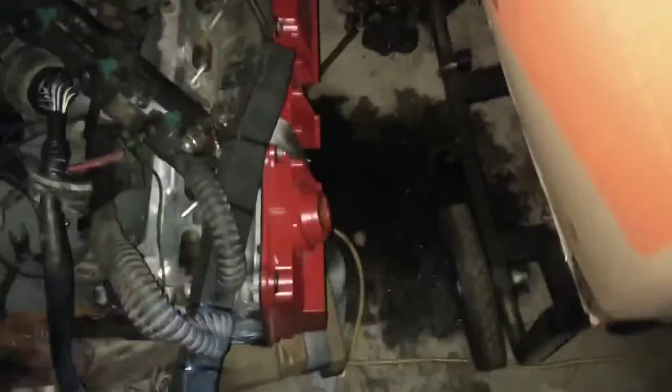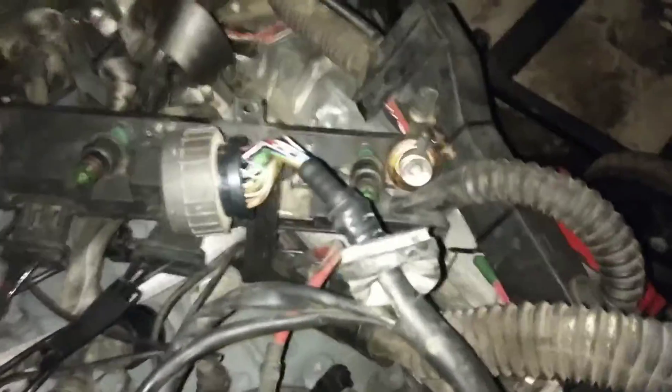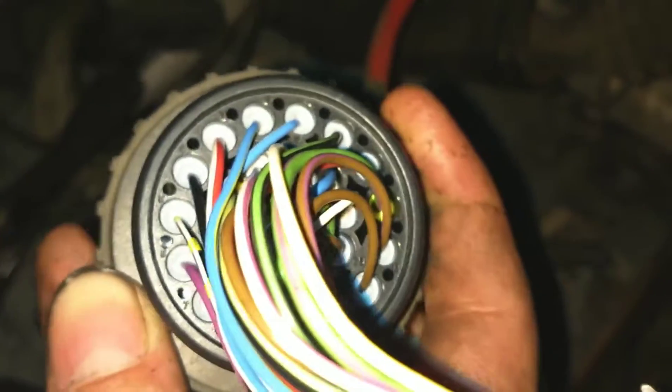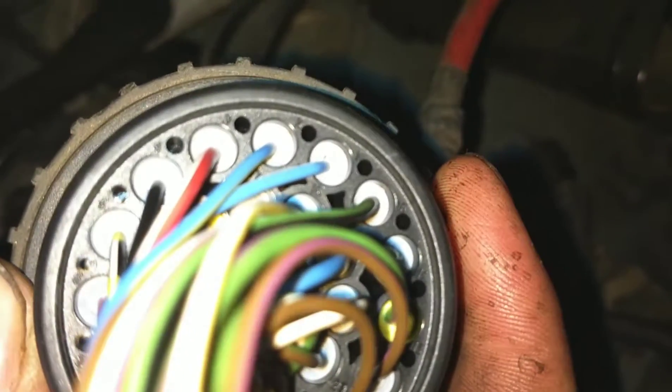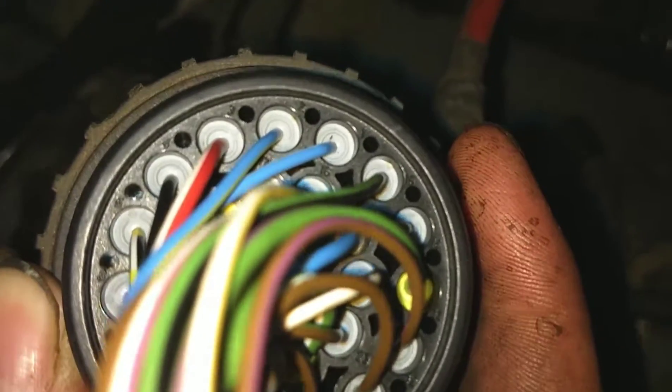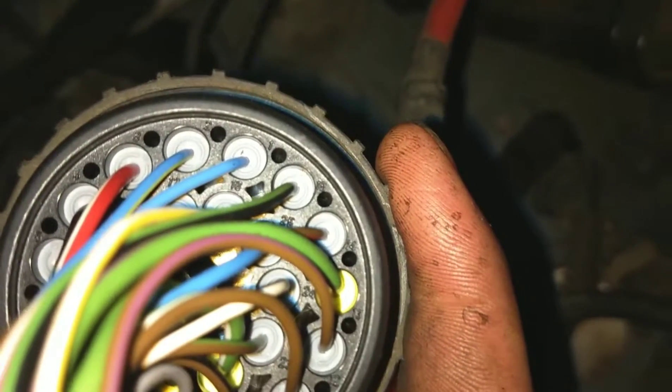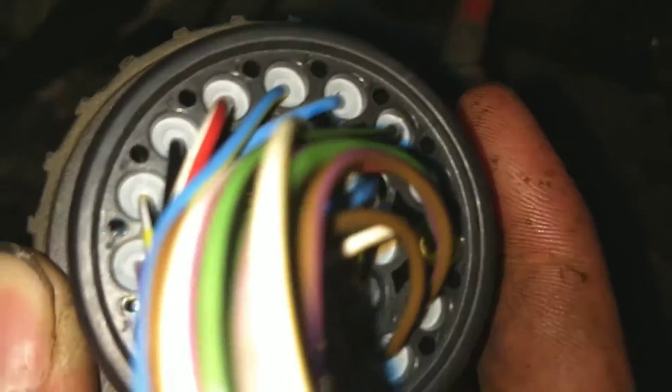There are numbers on the back of this connector. I've already peeled back the insulation there. That's 4, 5, trying to read it on the camera. 1 on the top going counterclockwise. 1, 2, 3, 4, 5, 6, 7. So basically, you're going to take this chart here.